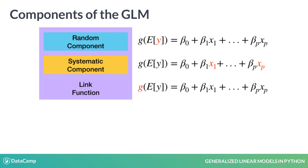The third and final component is the link function, which connects the random and systematic component. It is the function of the expected value of the response variable, which enables linearity in the parameters. By its construction, it allows the mean of the response variable to be non-linearly related to the explanatory variables. It is the link function that generalizes the linear model. Note that the choice of the link function is separate from the choice of the random component.